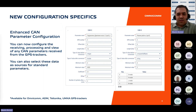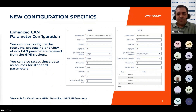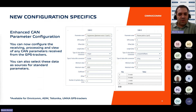Now users can independently configure enhanced CAN parameters received through the GPS trackers, including defining conversion rules and selecting specific parameters transmitted by the GPS trackers as data sources. These enhanced CAN parameters can now be used beyond just log report columns — they can serve as data sources for fuel calculations, universal inputs, RPM determination, and more.